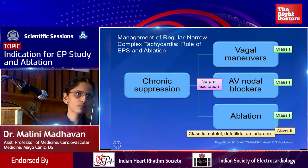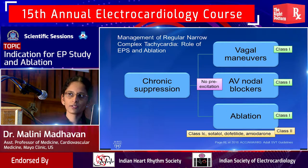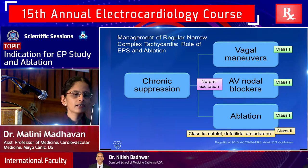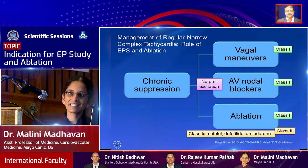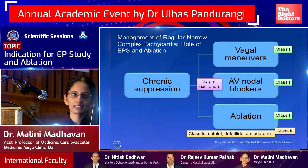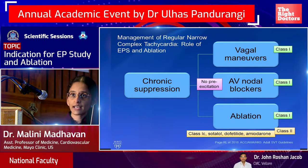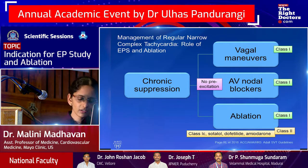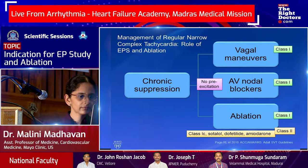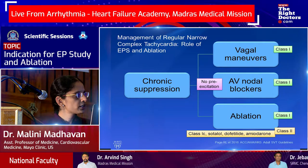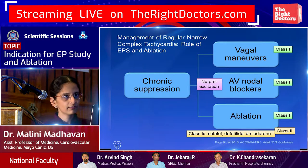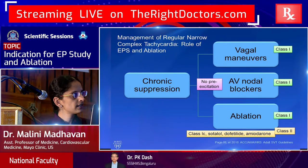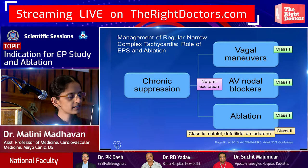Ablation has a 90-95% success rate for these SVTs, allowing patients to avoid side effects of membrane-active antiarrhythmics like flecainide or amiodarone. Per AHA guidelines, if AV nodal blockers fail, ablation is a Class 1 indication — the highest level — while membrane-active antiarrhythmics are Class 2.